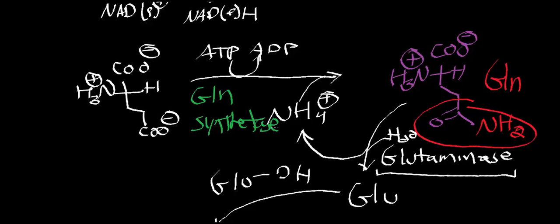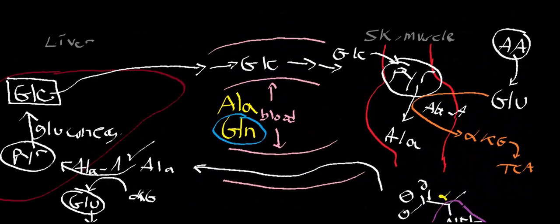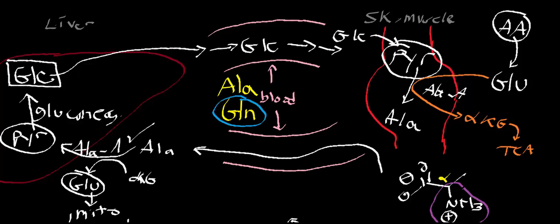So glutamine synthetase puts ammonia onto glutamate to make glutamine — that's how we transport the ammonia in the blood — because ammonia is toxic at high concentrations and we don't want it running free. It is especially damaging to brain cells.